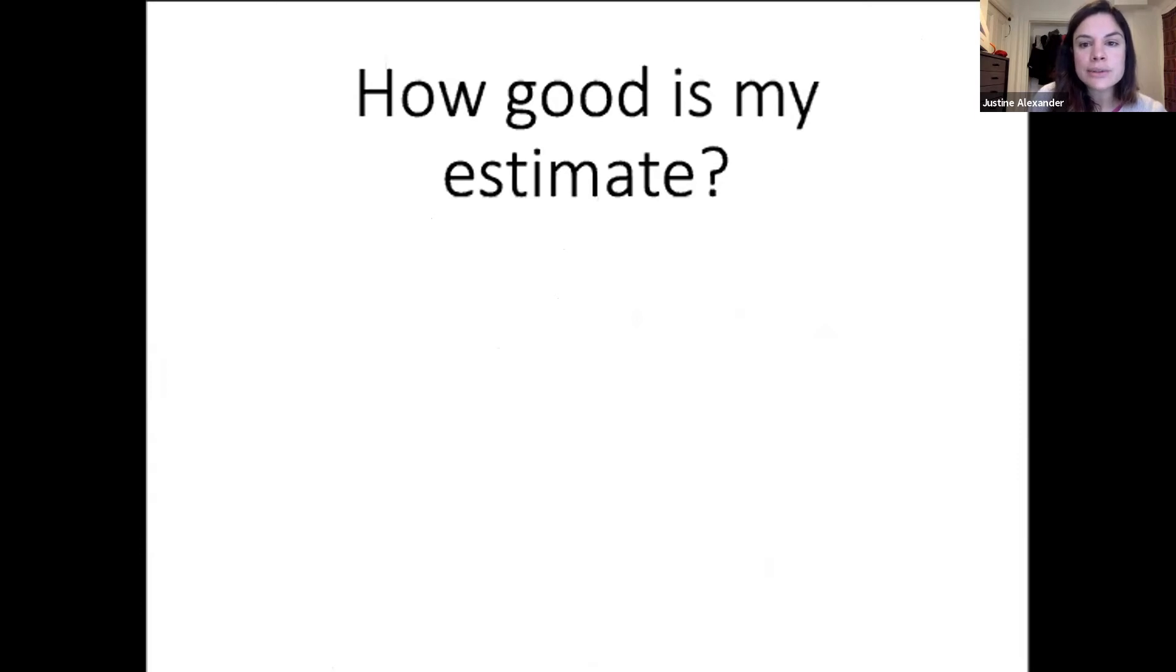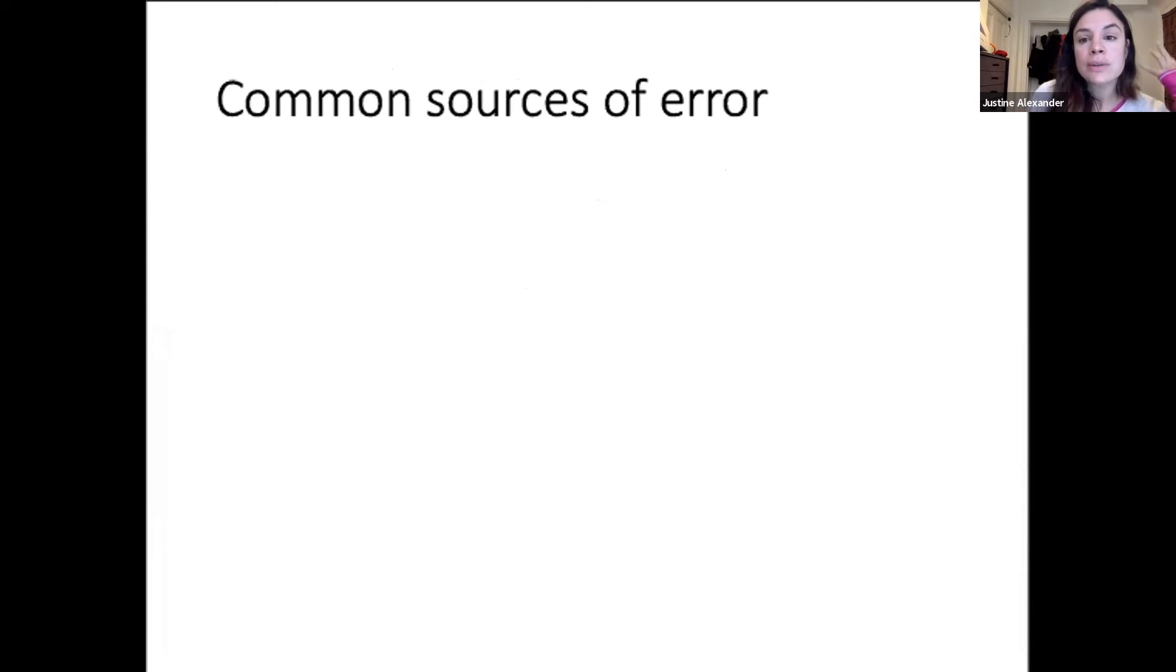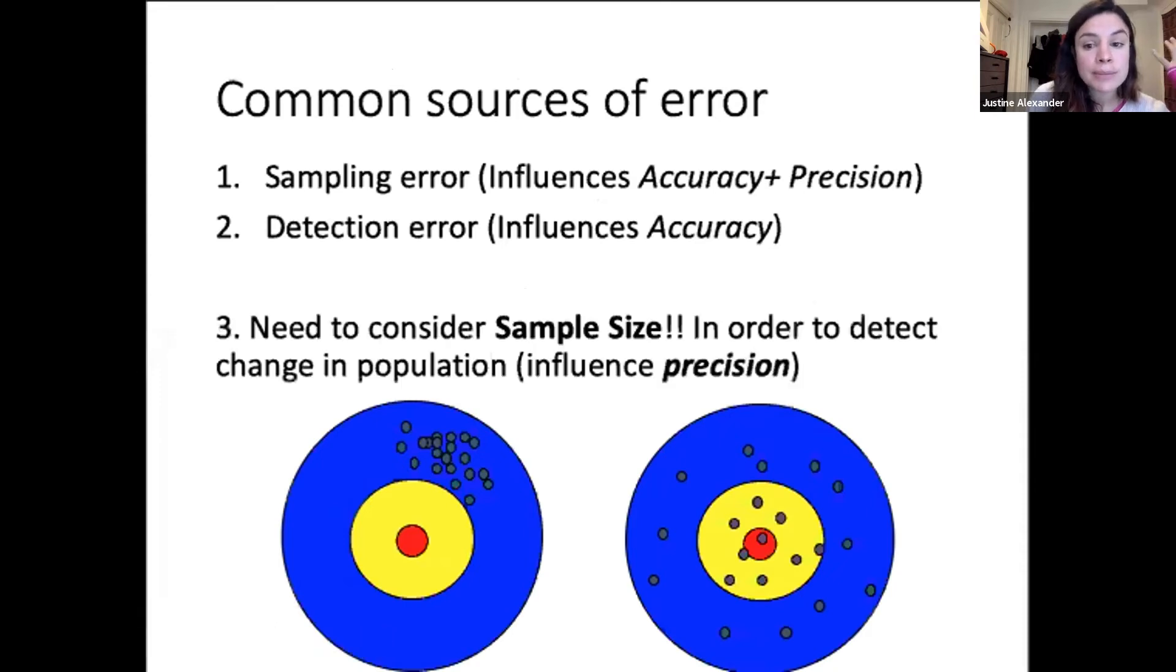With both abundance and area of coverage, we have to go back to how good is my estimate? We really encourage everyone to think, whatever model you're using, back to the principles of is it accurate and is it precise? We discussed in module one that there are common sources of error for our estimate, including sampling and detection area error, and these will influence accuracy and precision.